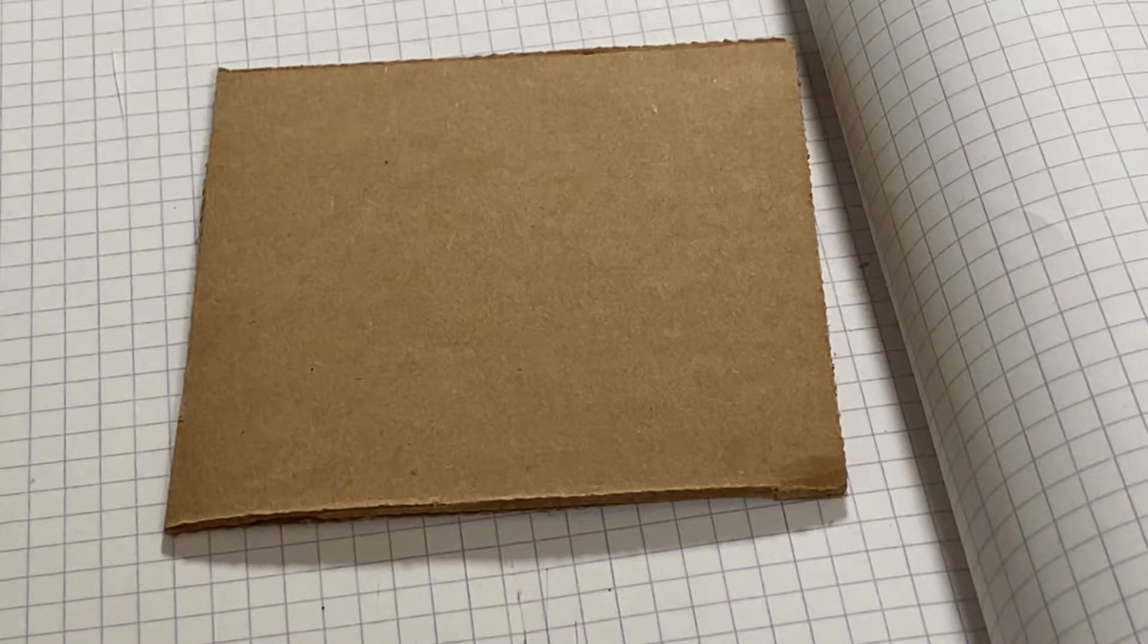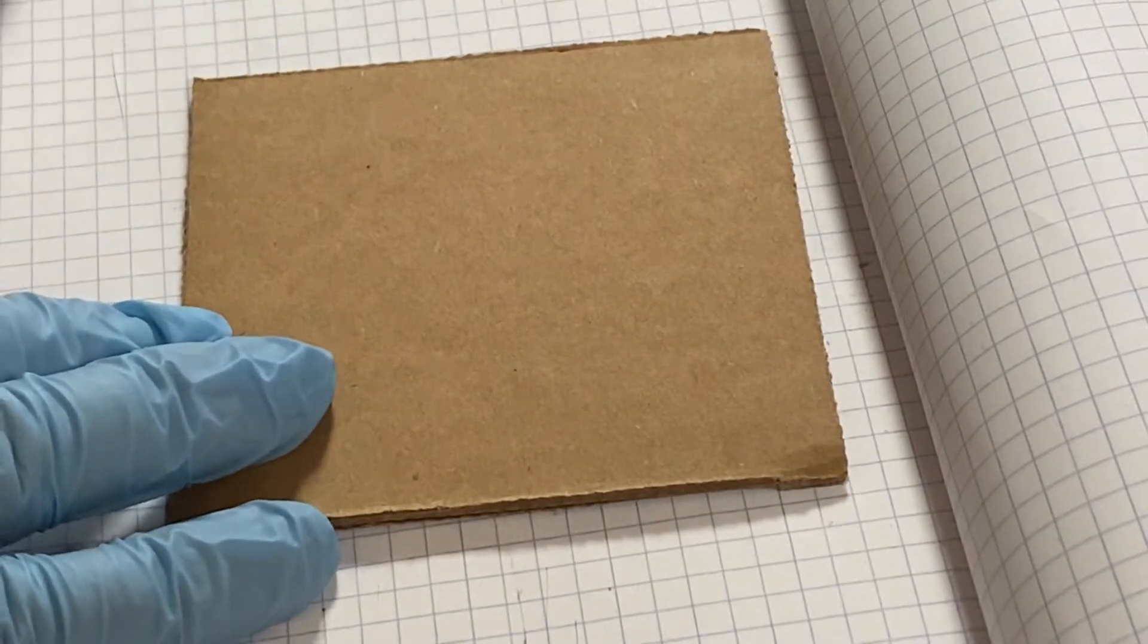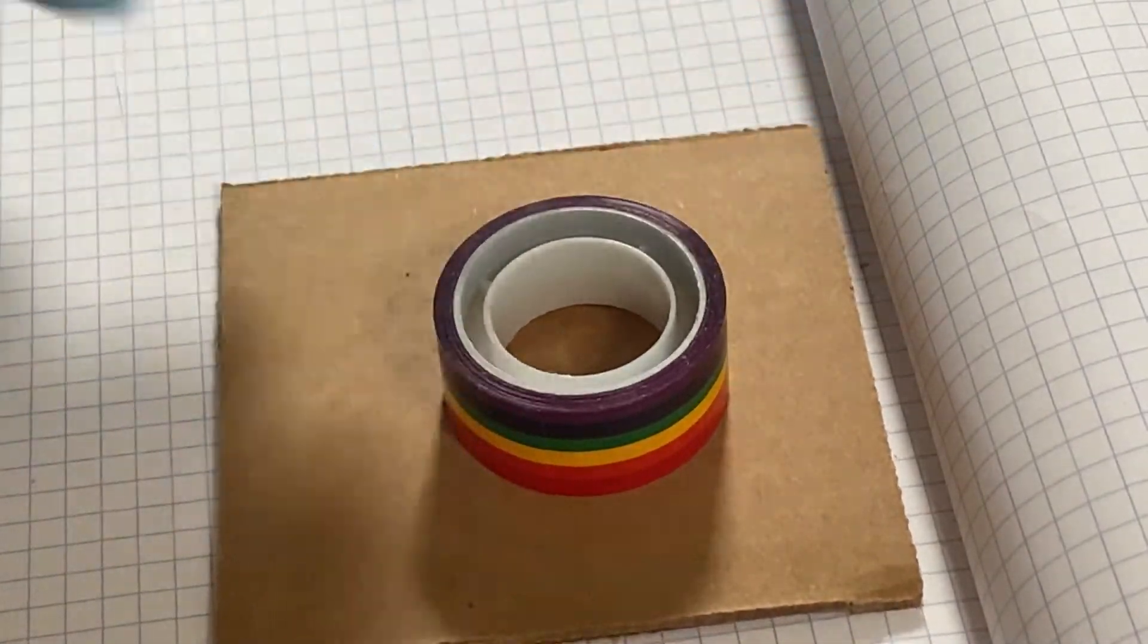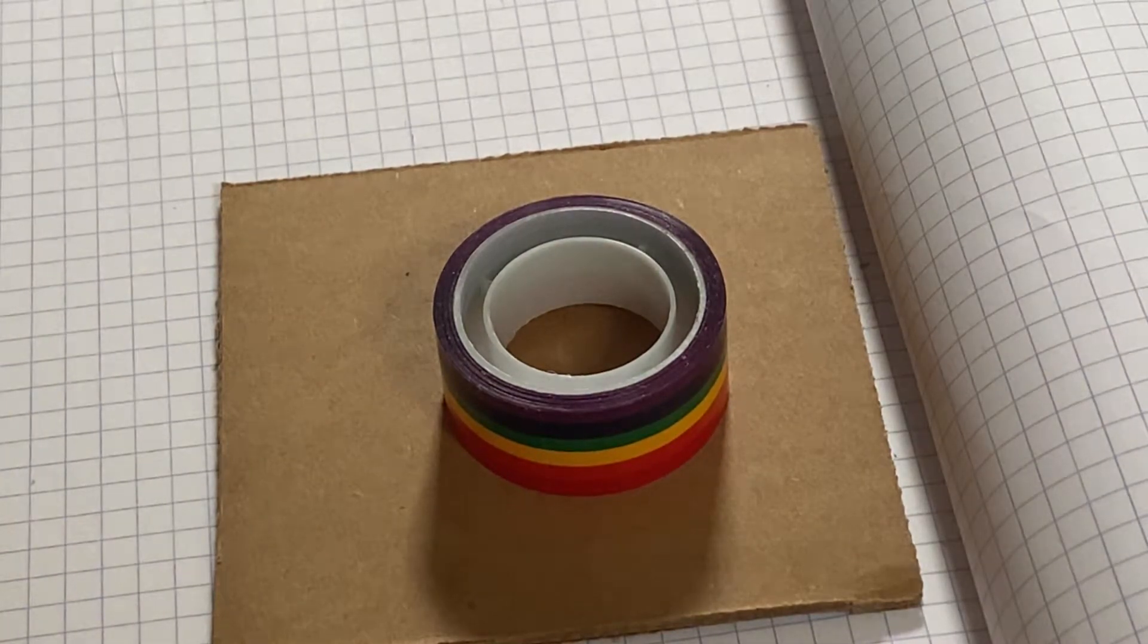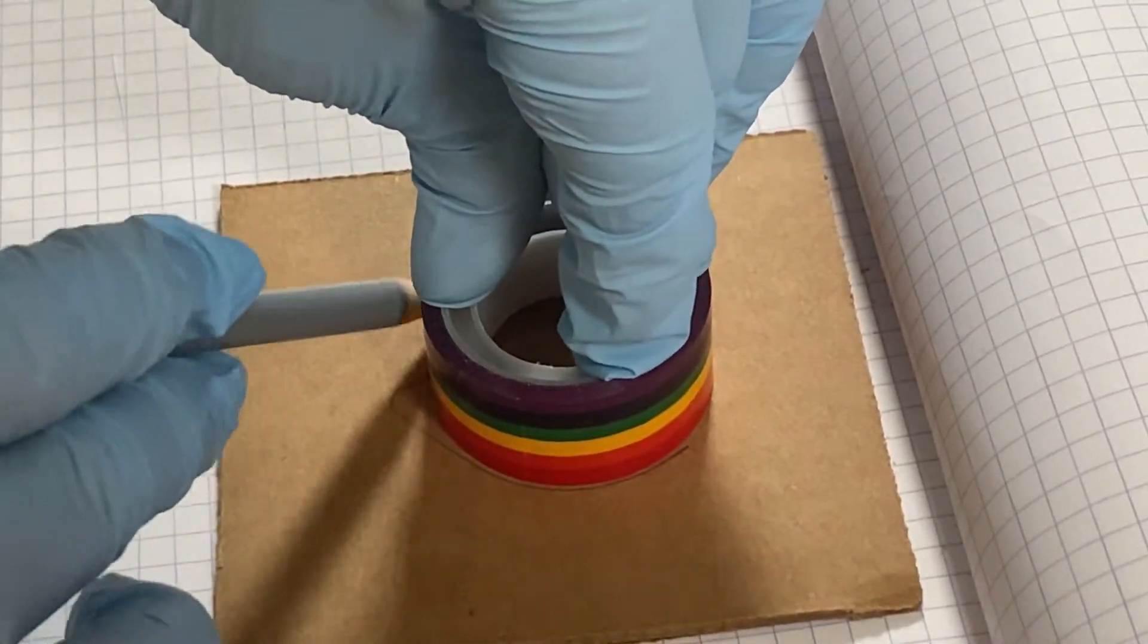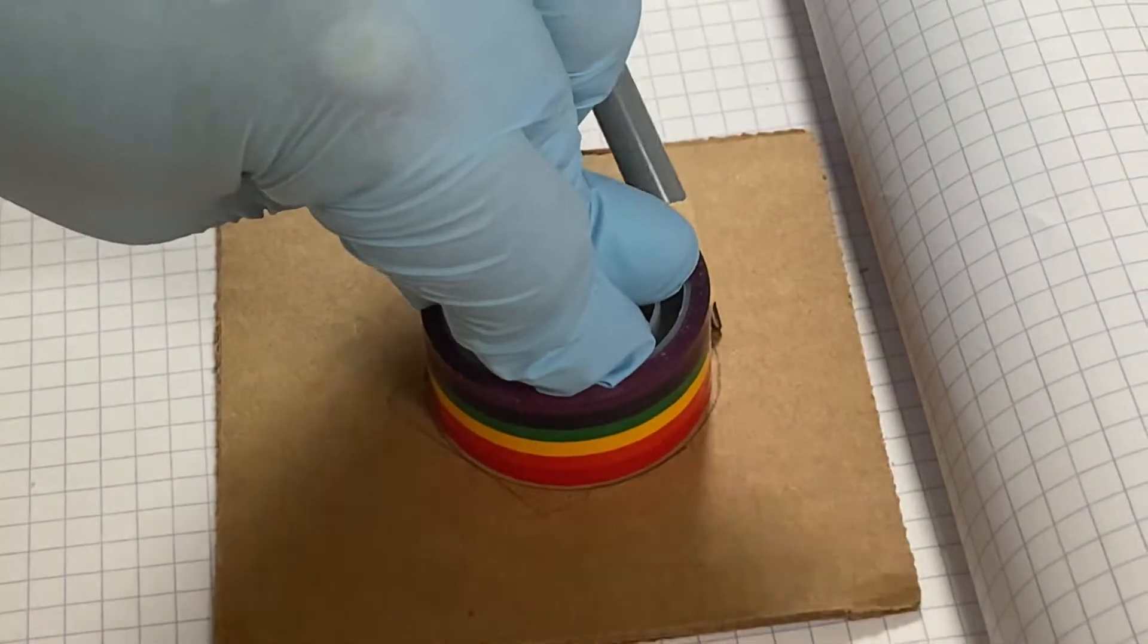So I'm going to make a circle pattern first. I've got this roll of tape here that I'm going to use as a template. I'm going to hold that in place and just roughly go around that with the pencil.